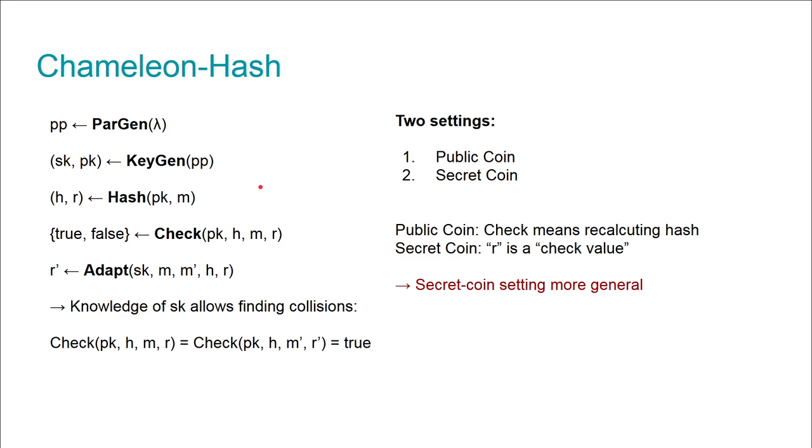Chameleon hashes come in two settings. The first one is a public coin setting and the second is a secret coin setting. In the public coin setting, checking essentially means recalculating the hash, while in the secret coin setting, the randomness R is considered a check value.